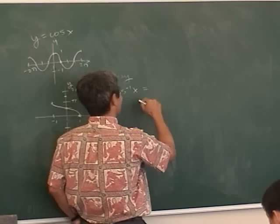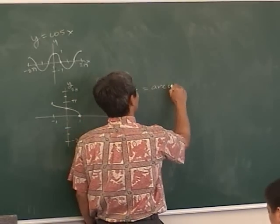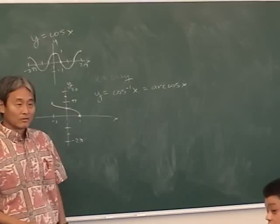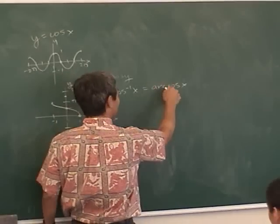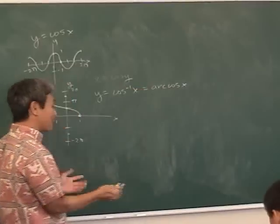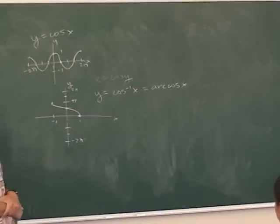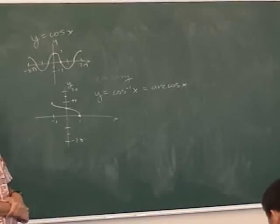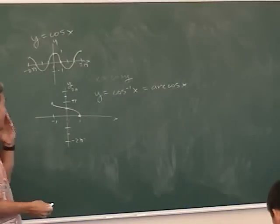What's another way of writing cosine inverse x? Arccosine x. Now both of these — cosine inverse x and arccosine x — are interchangeable. They mean exactly the same thing: the inverse of the cosine function with the restricted range. You'll see both in the calculus book next year, so you've got to know both.